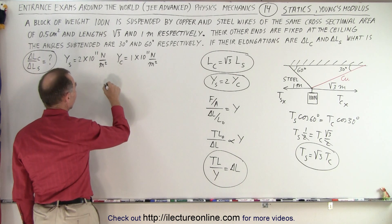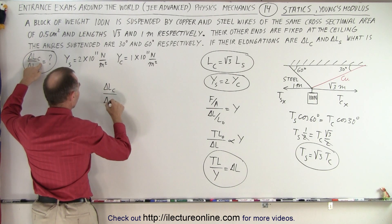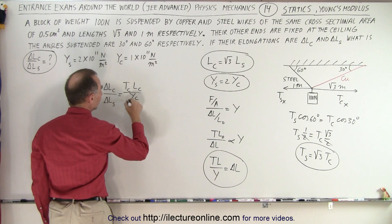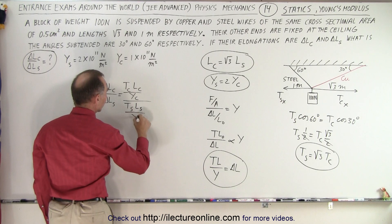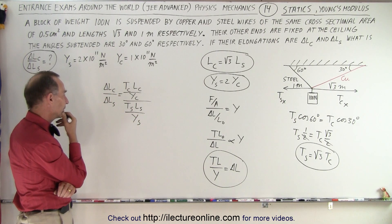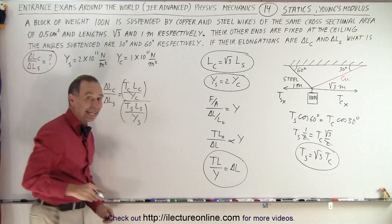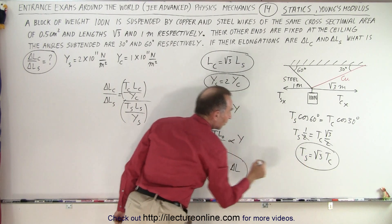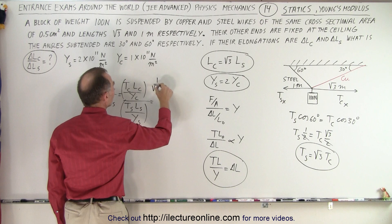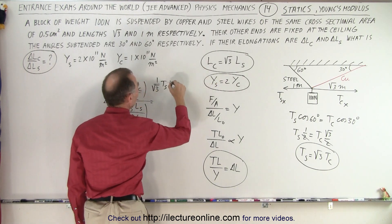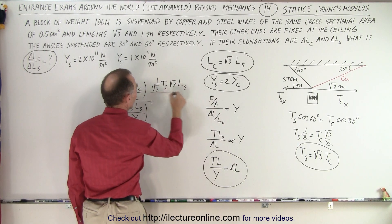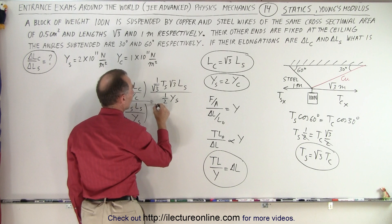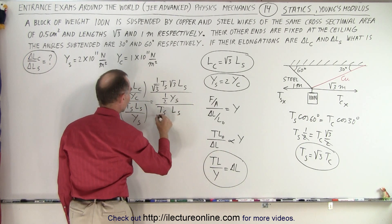So now we're going to say that delta L of the copper divided by delta L of the steel is equal to the tension of the copper times the length of the copper divided by Young's modulus of the copper, all divided by the tension of the steel times the length of the steel divided by Young's modulus of the steel. We substitute: the tension of the copper is one over the square root of three times the tension of the steel, and the length of the copper is the square root of three times the length of the steel. We also divide by Young's modulus of the copper, which is one half of Young's modulus of the steel.